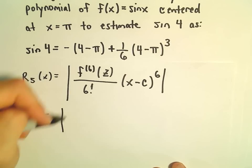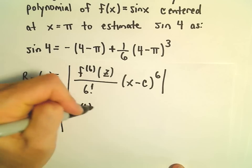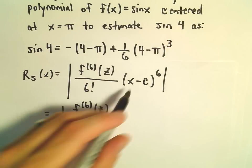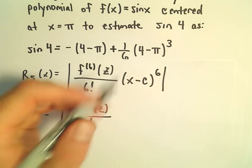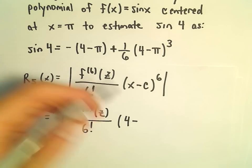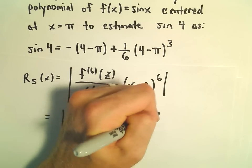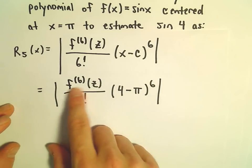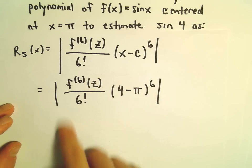So in this case, we'll have to figure out an expression for the sixth derivative. Six factorial we can compute that. Our x value that we're plugging in here is 4, so 4 minus where we're centered at, which is at pi, all of that raised to the sixth. So now we want to basically try to maximize this expression.